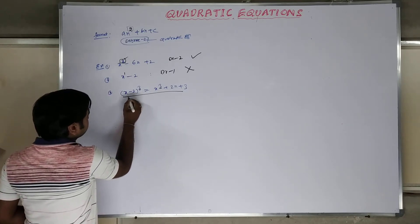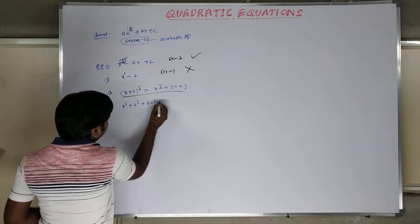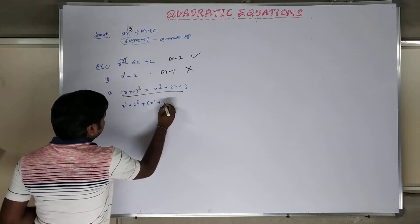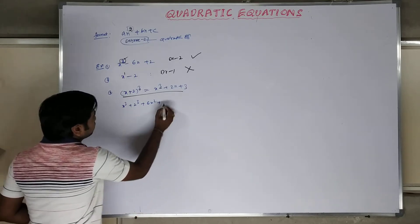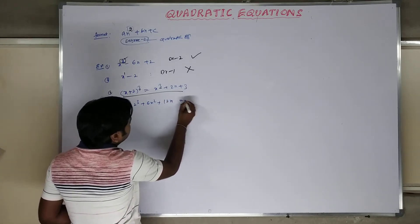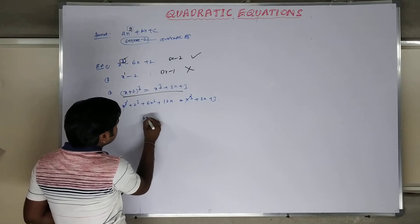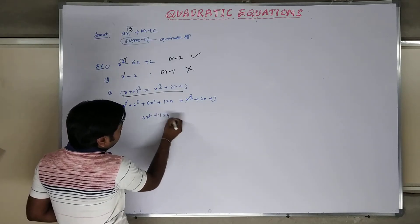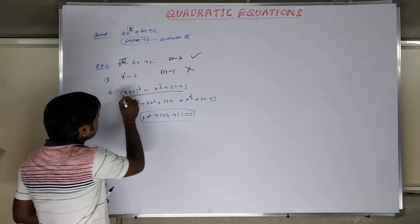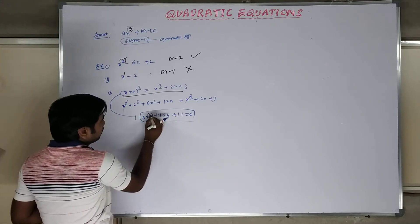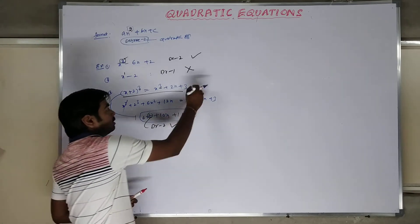Let us expand using (a + b)³ = a³ plus b³ plus 3a²b plus 3ab². After expanding (x minus 2)³, we get terms: 3 to 6, then 12x. On the right side x³ plus 2x plus 3 — the x³ cancels, leaving 6x², and 2x combines to give some x terms, plus 3 gives 8 plus 3 equals 11. After simplification, the degree of the equation is 2, so this is also a quadratic equation.